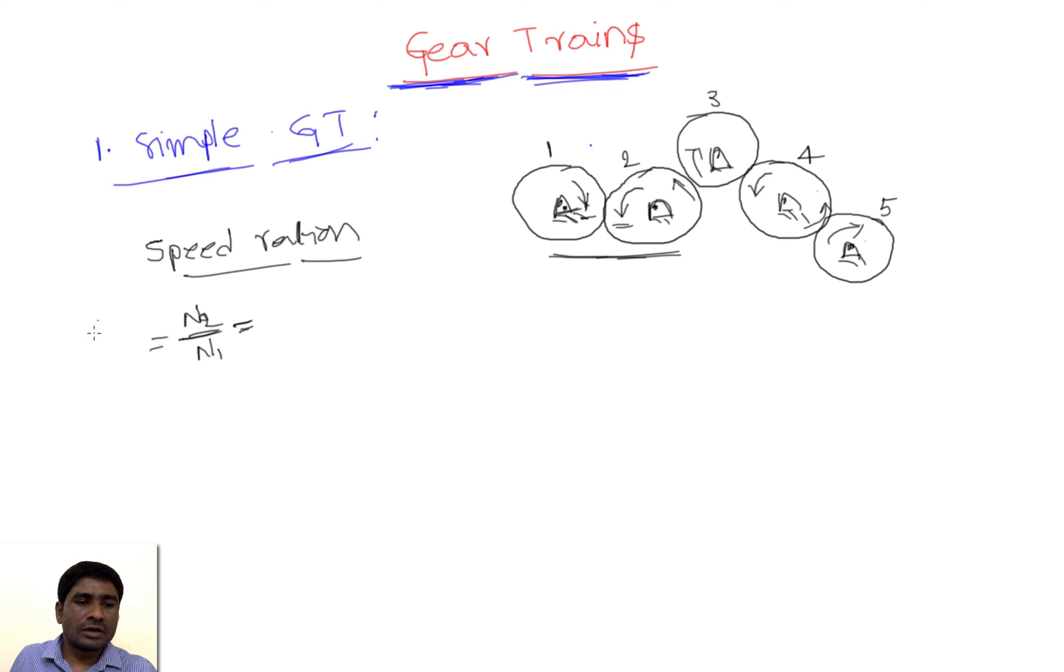If you could recollect, the formula is omega 2 by omega 1. These two are in proportion and would be inversely proportional to the teeth, so t1 by t2. For gears 2 and 3, n3 by n2 equals t2 by t3. And for the set 3 and 4, n4 by n3 equals t3 by t4.